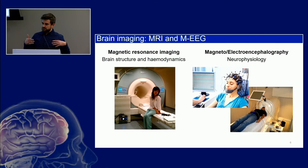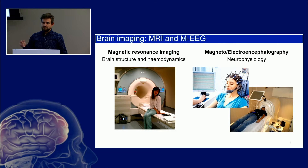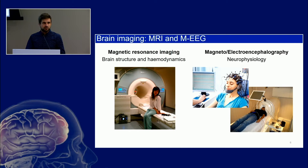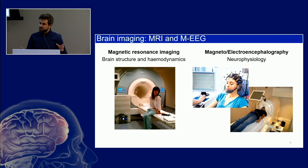EEG and MEG are based directly on measurement of the electrical currents in the brain — very rapid firing of neurons down to about the millisecond. My bread and butter technique is MEG. It's fantastically well tolerated, and it tells us about the ongoing fluctuations in neural activity in the brain, so it complements MRI quite nicely.